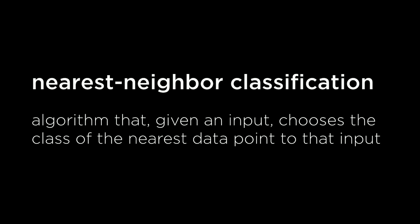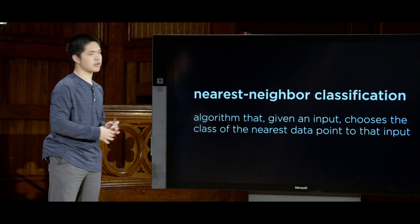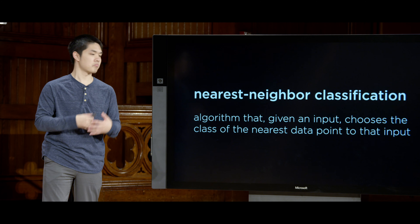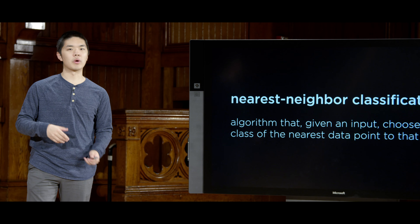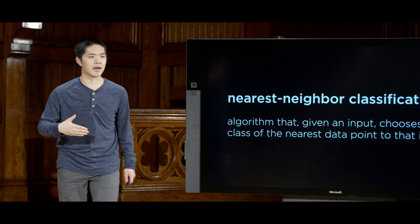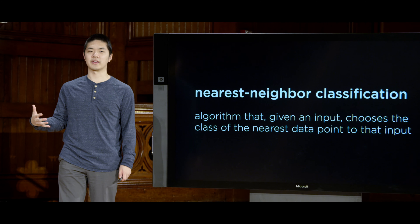Nearest neighbor classification solves classification problems with this algorithm: given an input, choose the class of the nearest data point to that input. By class, we mean category — like rain or no rain, counterfeit or not counterfeit. We choose the category based on the nearest data point. So given all that data, we ask: is the nearest data point a blue point or a red point? Depending on the answer, we make a judgment — we think it's going to be blue, or we think it's going to be red.